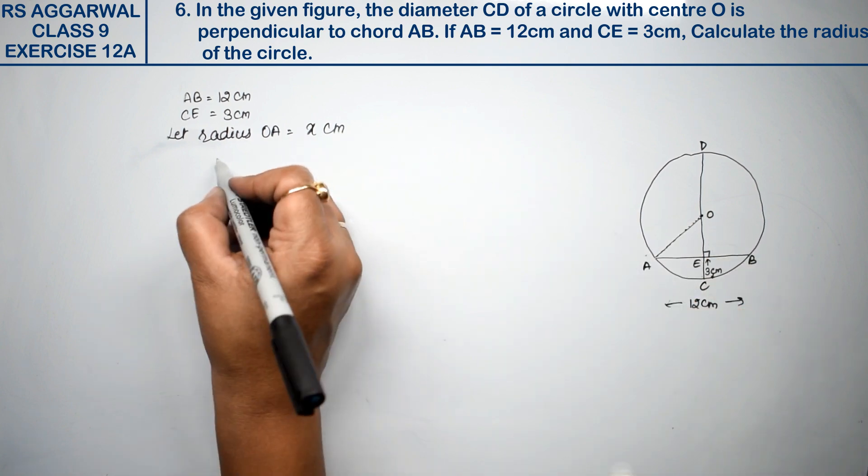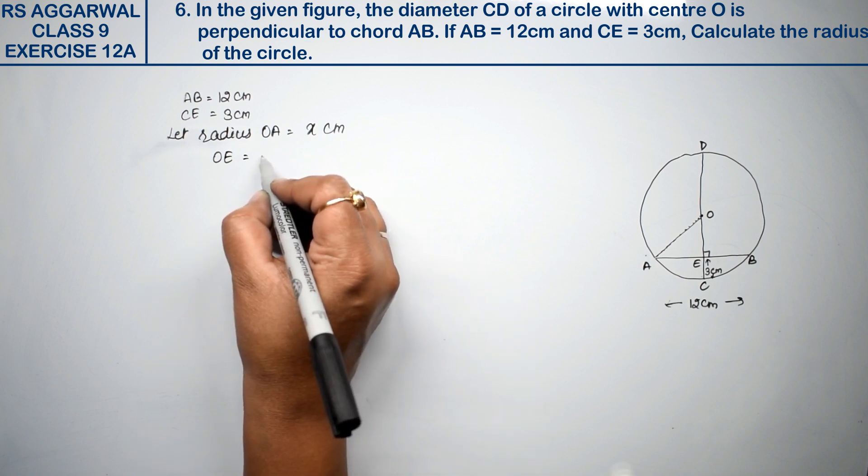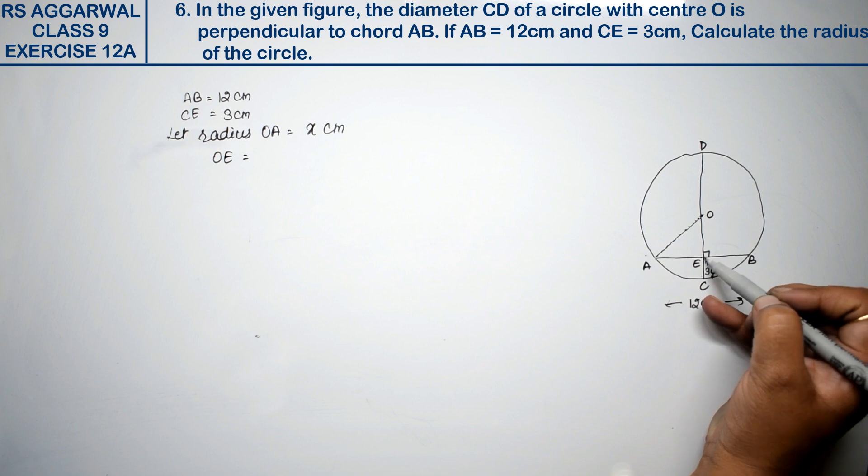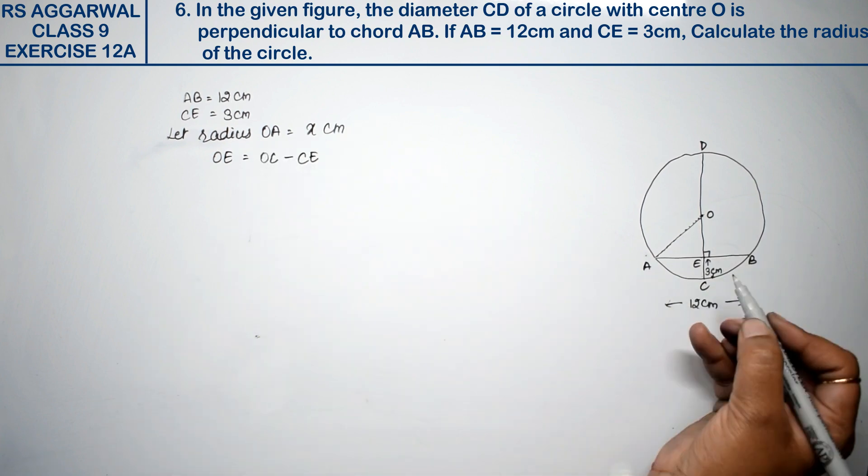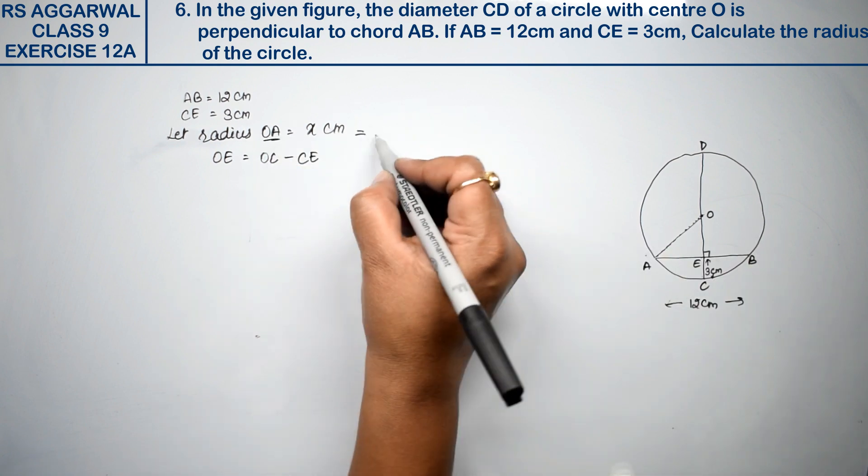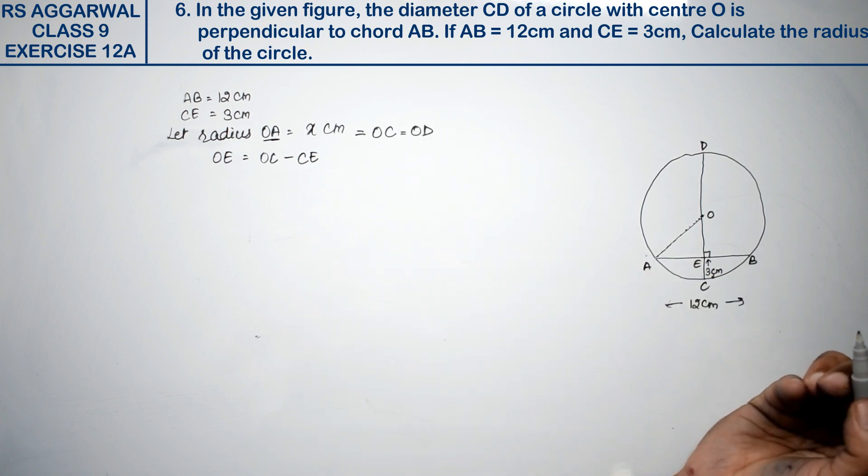So, OE is how much? OE equals to how much? I will teach this. With OC, CE will be minus, then OE will be removed. Now, we know the radius OA equals to OC and OD. All the radius are the same, right friends?